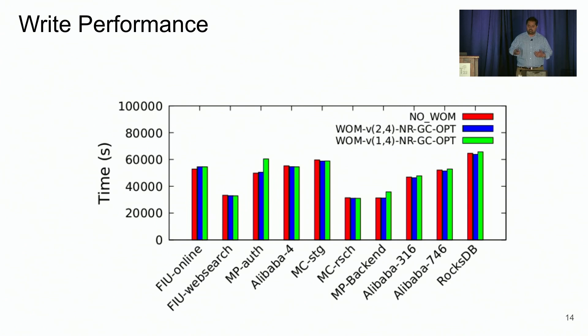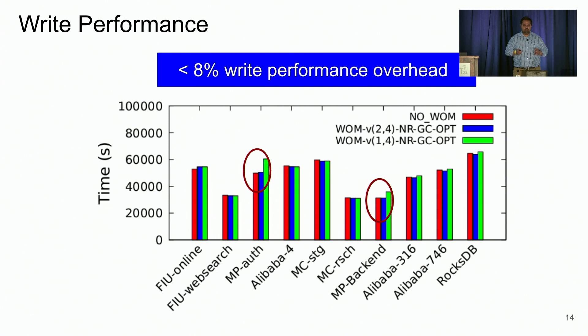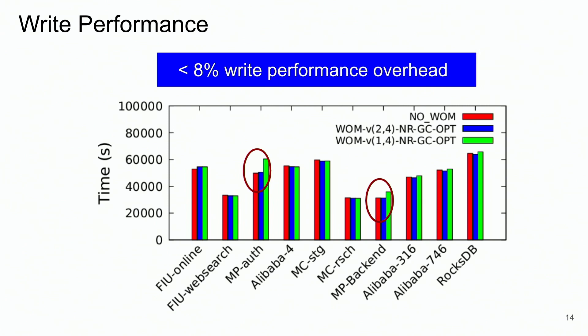So we again run all our workloads shown on the x-axis. And we compute the amount of time it takes to run each workload. And we see that using our no read optimization and GC opt optimization, we are able to bring down the performance overheads of WOM V codes to close to no WOM configuration in almost all cases, except two cases where the workloads were not SSD friendly, and had a higher degree of WOM coding scheme, which is WOM V(1,4) coding scheme. Overall, the write performance overhead is kept under 8% in our implementation.